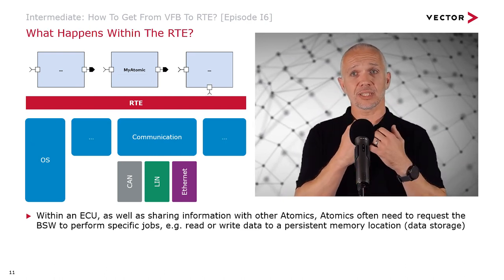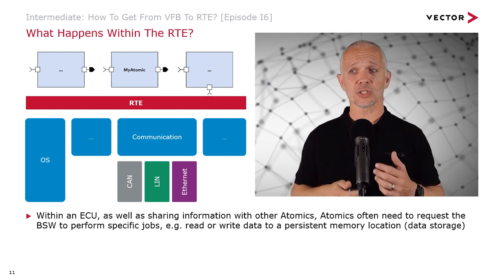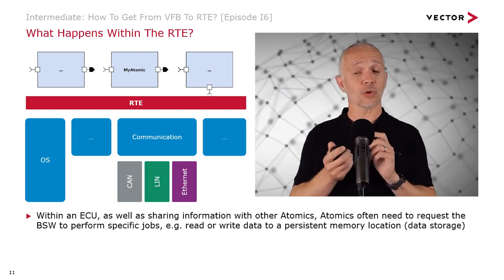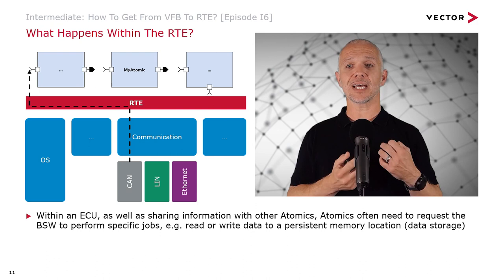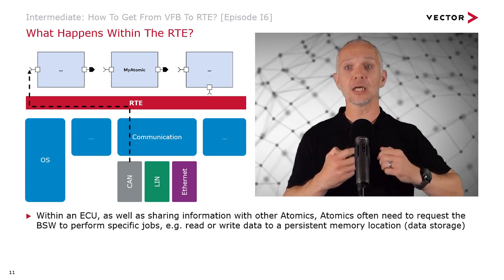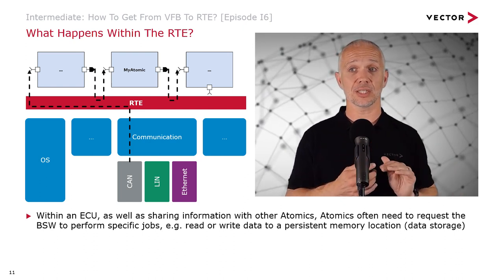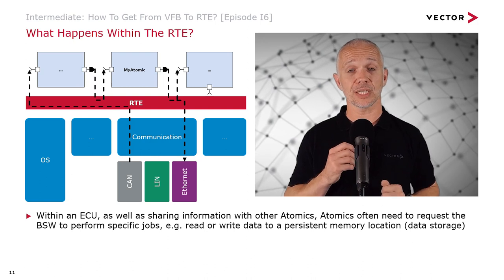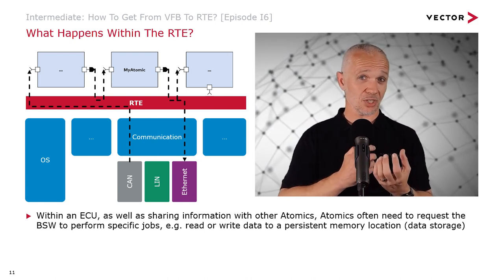Now let's think about some other things that happen inside an ECU — what happens within the RTE. As well as sharing information with other atomics, atomics often need to request the basic software to perform specific jobs for them, for example to read or write data to a persistent memory location for storage. We may have information that comes up from a CAN bus into an atomic via an RTE read port, then an RTE write down into the RTE, and the next atomic in that ECU does an RTE read again. This RTE write also triggers a communication out onto Ethernet, while another software component picks up that information inside the same ECU and does something with it.